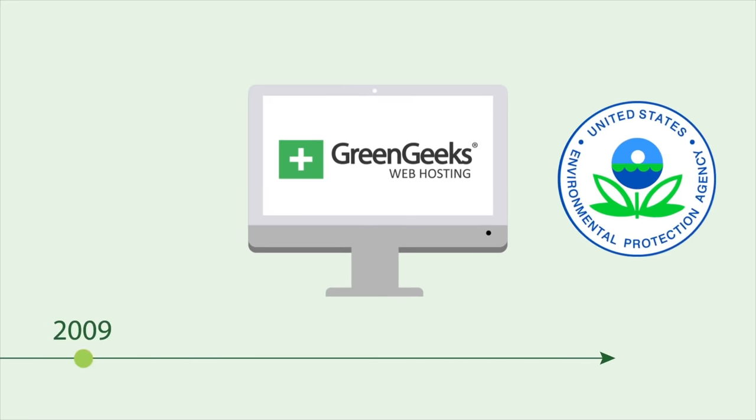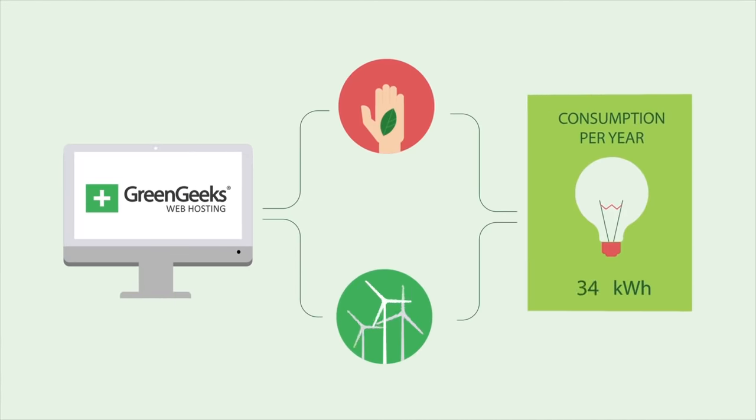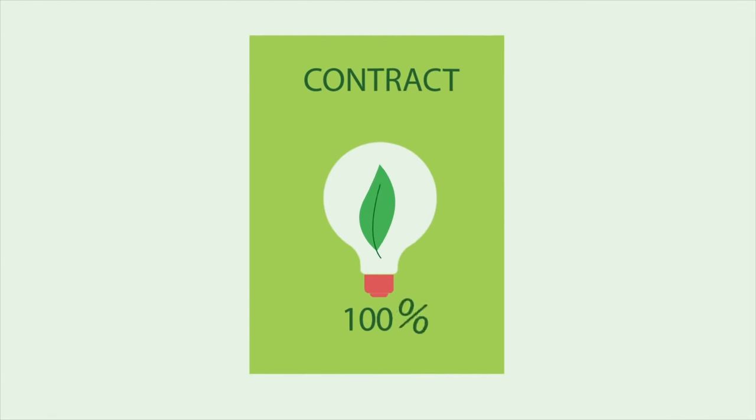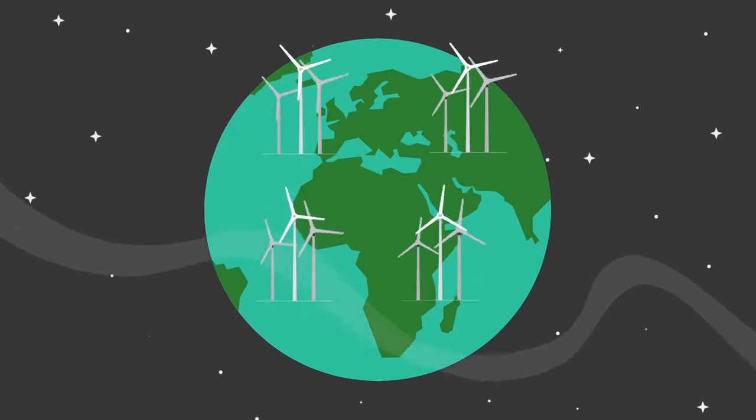An EPA Green Power Partner since 2009, we work with non-profit environmental groups and wind farms to calculate how much energy we use in a year. We then buy not 100% but 300% the amount of energy we use and push it back into the grid. Making the grid greener for everyone.